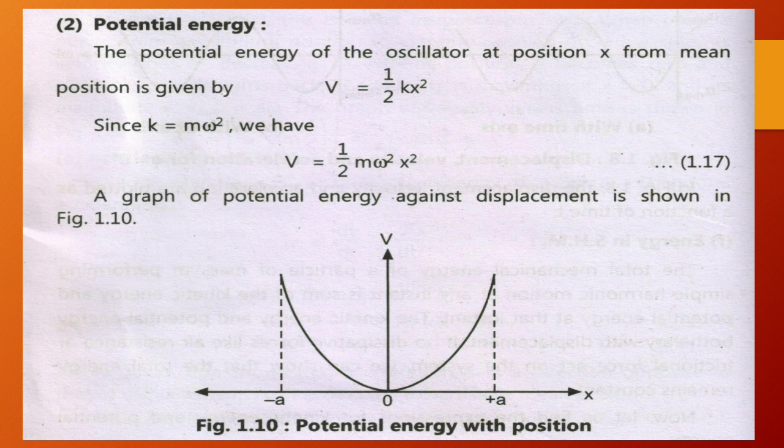The figure shows a graph of potential energy against displacement. In the figure we see that at x = 0, potential energy is equal to zero, and at x = +a and x = -a, potential energy is maximum.